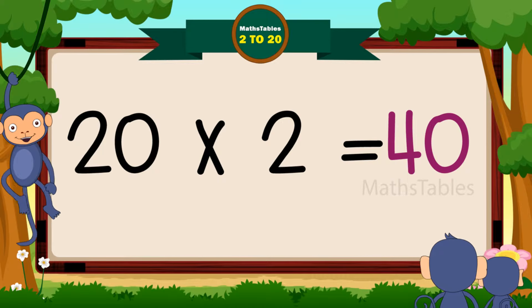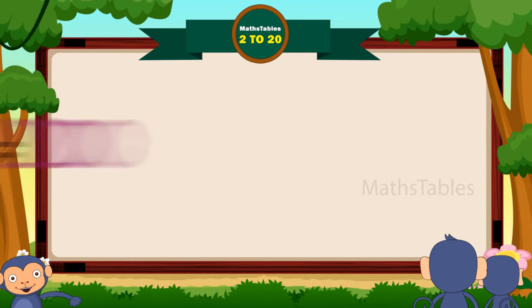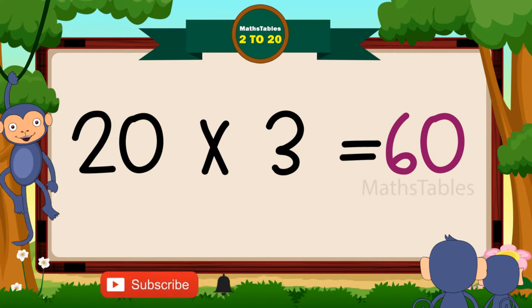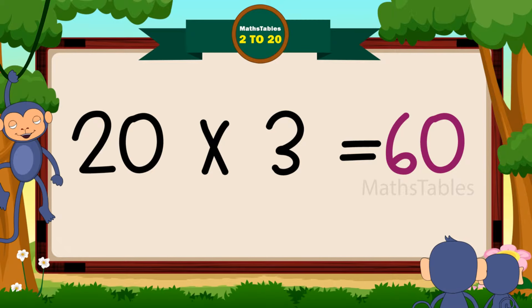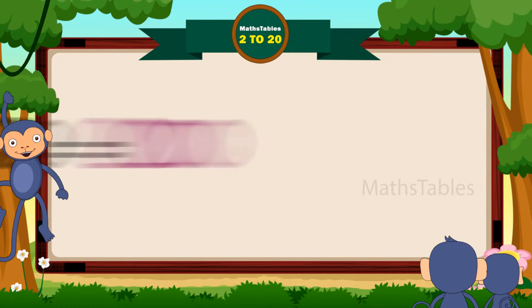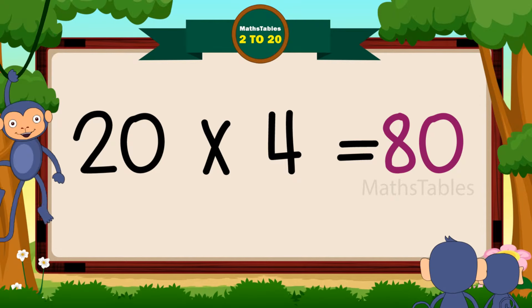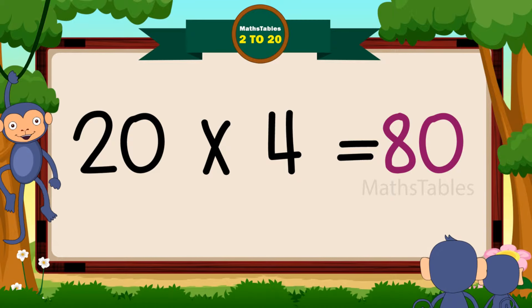2 2's are 40, 2 2's are 40. 2 3's are 60, 2 3's are 60. 2 4's are 80, 2 4's are 80.